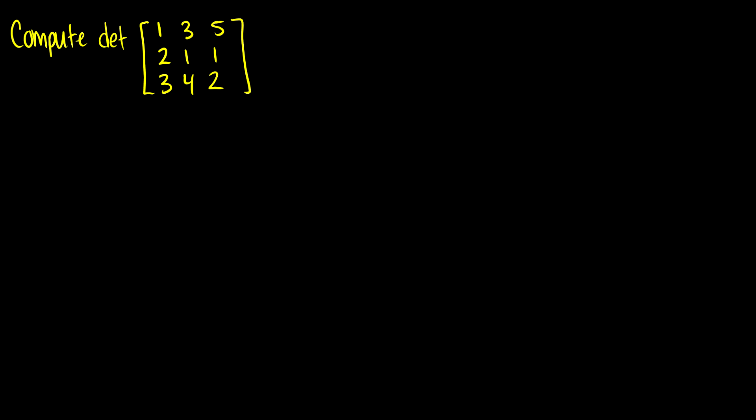Okay, so let's do that. Let's compute the determinant of [1, 3, 5; 2, 1, 1; 3, 4, 2]. Okay, so we want to start out, and I'm going to do this very formally here. So I'm going to label everything. So what's the formula for the determinant? So the determinant of A is going to equal A11 times the determinant of A11 minus A12 times the determinant of A12 plus A13 times the determinant of A13.